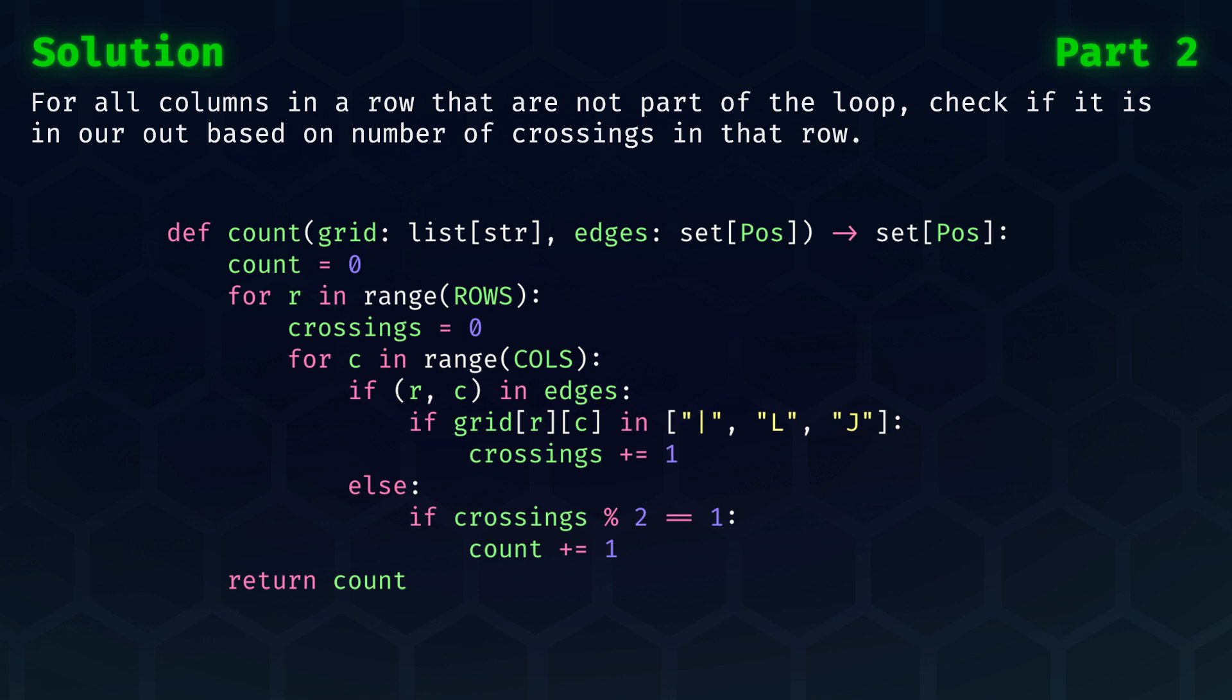Note that here we limit ourselves to the chosen representatives of the three crossing groups. Please try to make sure that you really understand and convince yourself of why this works, as it is key to fully understanding today's part two solution.